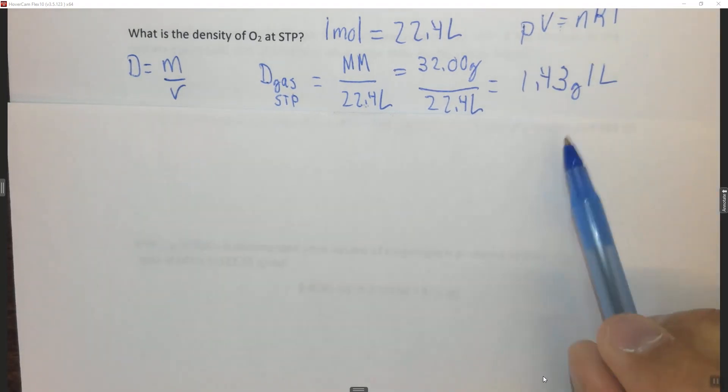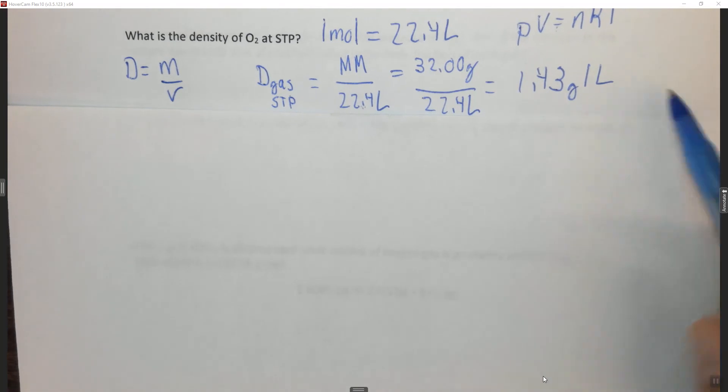Note that the density of gases are in grams per liter instead of the typical unit of grams per milliliter, or sometimes grams per centimeter cubed. A milliliter and a centimeter cubed are the same thing. The density of water is around 1 gram per milliliter. This is 1.43 grams per liter. Oxygen is of course far less dense than water, which is a liquid.